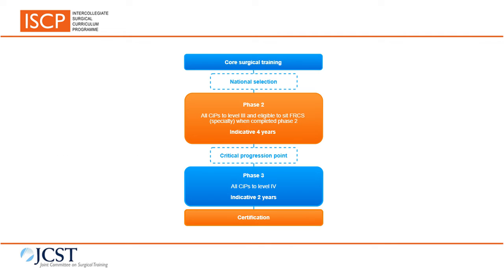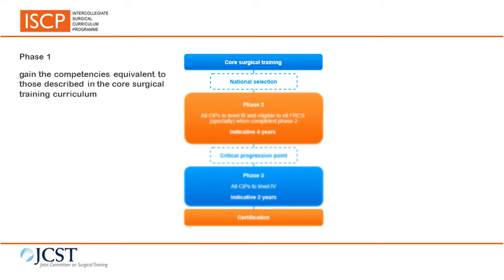This slide shows the typical phases of training in a surgical training pathway. The purpose of phase one is to gain the competencies equivalent to those described in the core surgical curriculum, or parts of the core surgical curriculum necessary to progress into the ST3 role. For most specialties, the indicative time for phase one is two years.